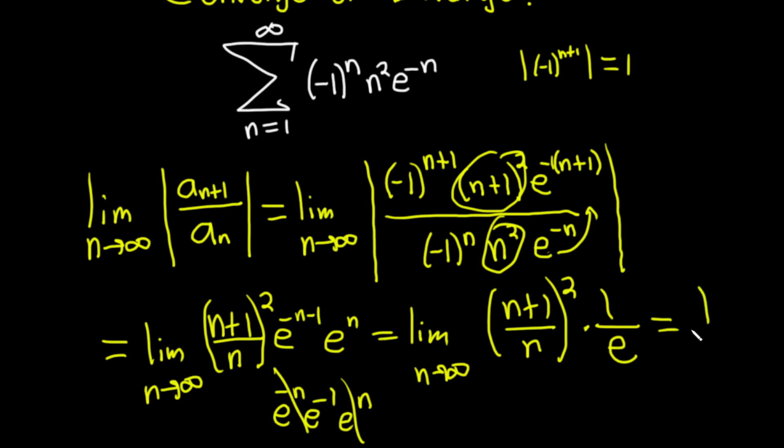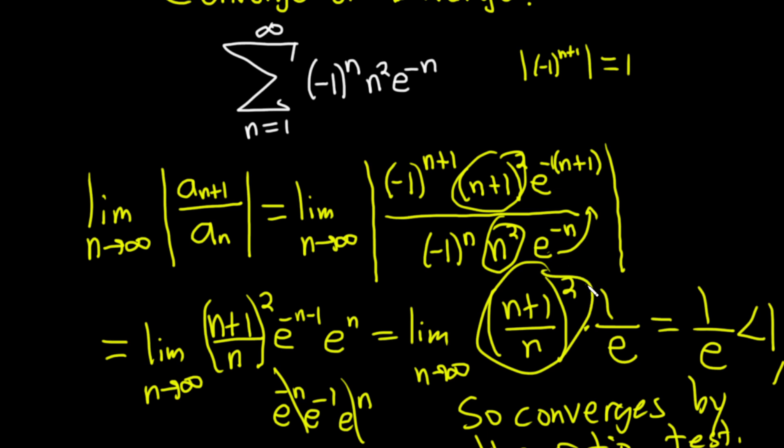And this equals 1/e which is less than 1, so it converges by the ratio test. This limit here is 1 obviously, so you just get 1/e which is less than 1, so we have convergence by the ratio test.